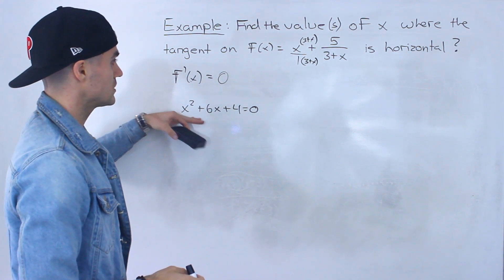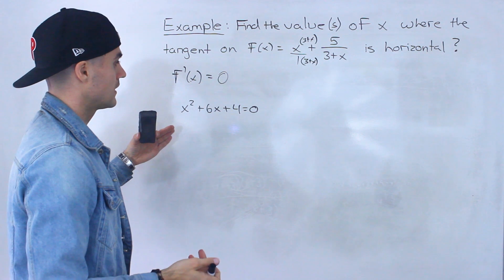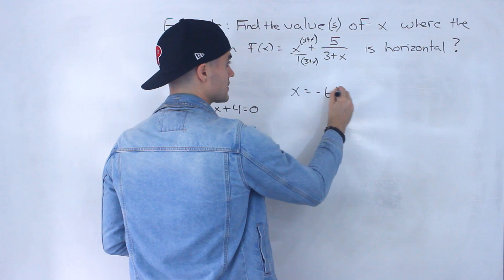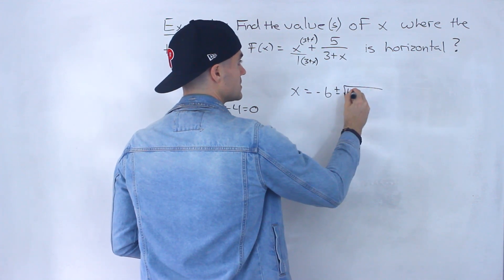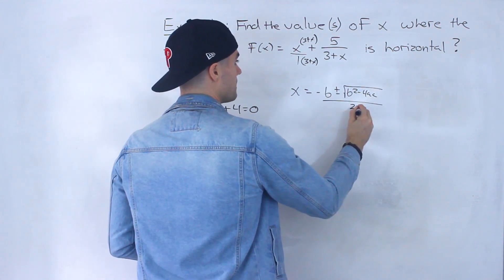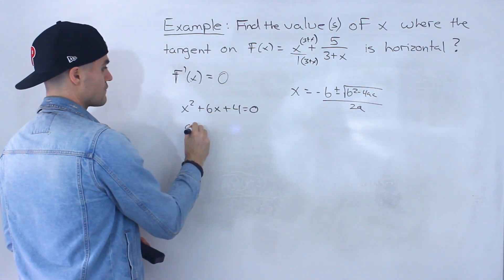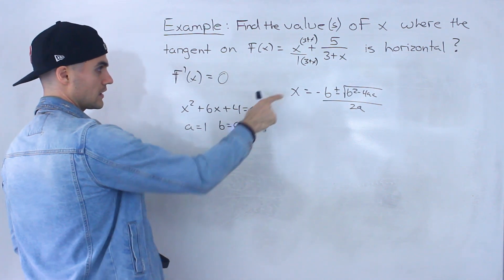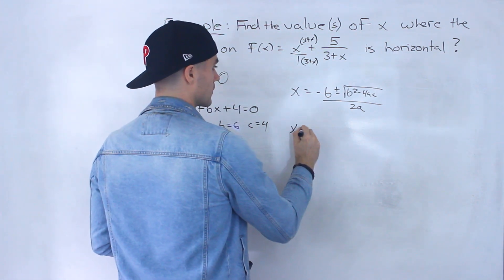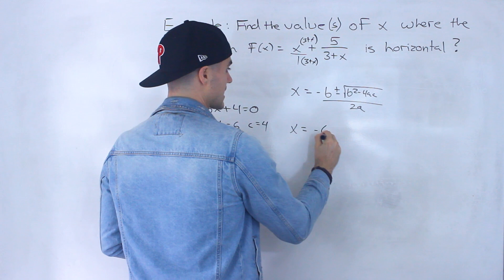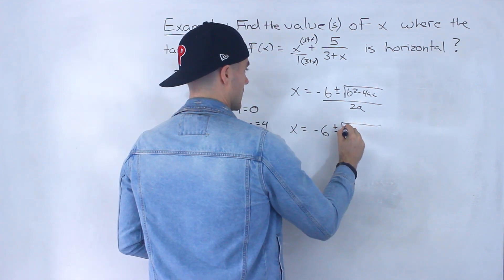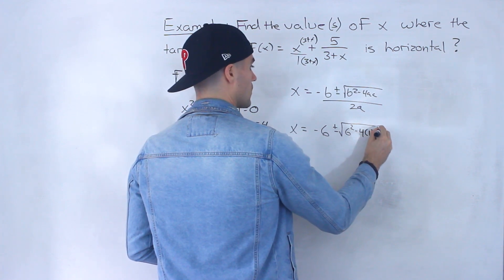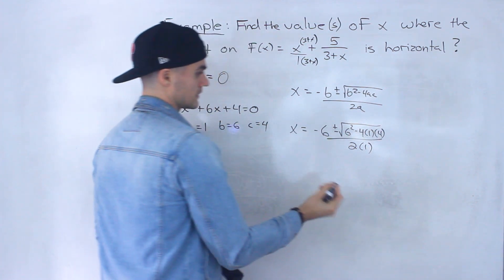So again, we can't factor this smoothly, so what we're going to have to do is use the quadratic formula. So we're going to have x equals -b ± √(b² - 4ac) all over 2a. And so in this case the a value is 1, the b value is 6, the c value is 4. So plugging all of that in here, we would have -6 ± √(6² - 4(1)(4)) all over 2(1) like that.